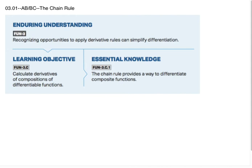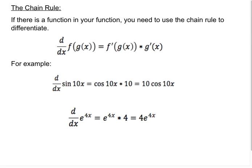This is AP AB and BC Calculus. We're doing Unit 3, Section 1, which is the chain rule. The chain rule is what we use when there is a function inside your function. So if there's a function inside your function, for instance f of g of x, you're going to need to use the chain rule to differentiate. Most of the things we've seen so far, I've intentionally avoided putting a function inside a function.